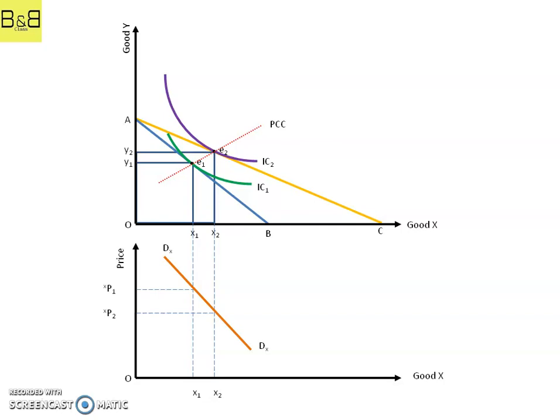It also verifies the law of demand, that is negative relation between price and unit of commodity demanded. This Marshallian demand curve holds good for normal goods and is derived using the concept of price consumption curve from the effects of change in price shown in the equilibrium of the consumer.